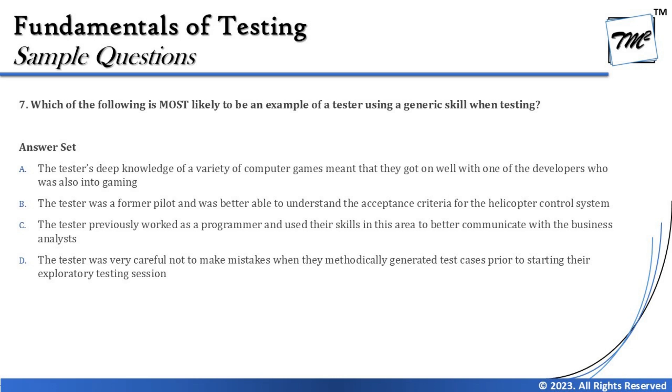Option A says the tester's deep knowledge of a variety of computer games meant that they got on well with one of the developers who was also into gaming. This doesn't make sense because hiring a tester does not mean the tester will be able to do development. A tester's job is to test the system, not solve problems for developers. So option A is conflicting and not how a generic skill of testing can be utilized.